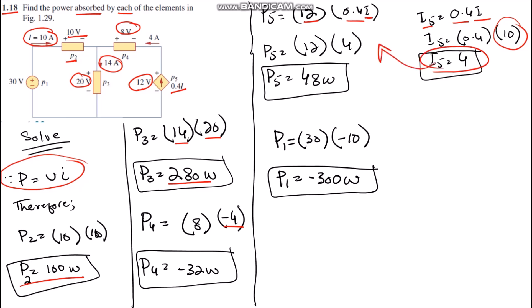Then we substitute the values and get P5 equals 48 watts. Now for P1, which is the 30-volt source.